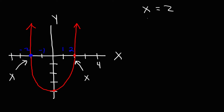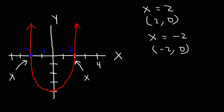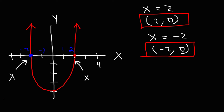So we have one x-intercept at positive 2 with the ordered pair (2, 0), and the second x-intercept at negative 2 with the ordered pair (-2, 0). Now for the y-intercept, we can see that the graph touches the y-axis at negative 4. So the y-intercept is y equals negative 4, or as an ordered pair (0, -4).